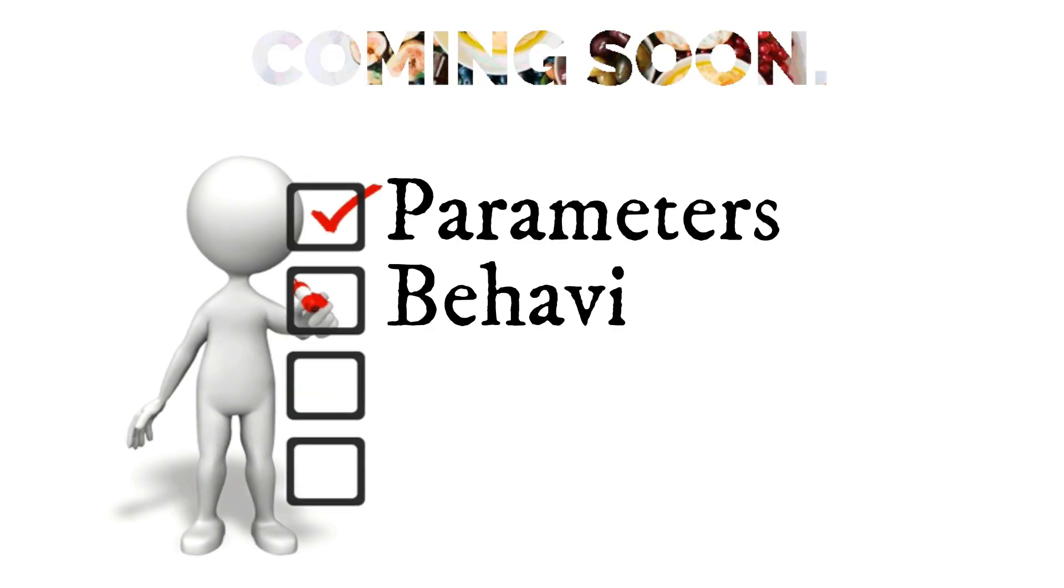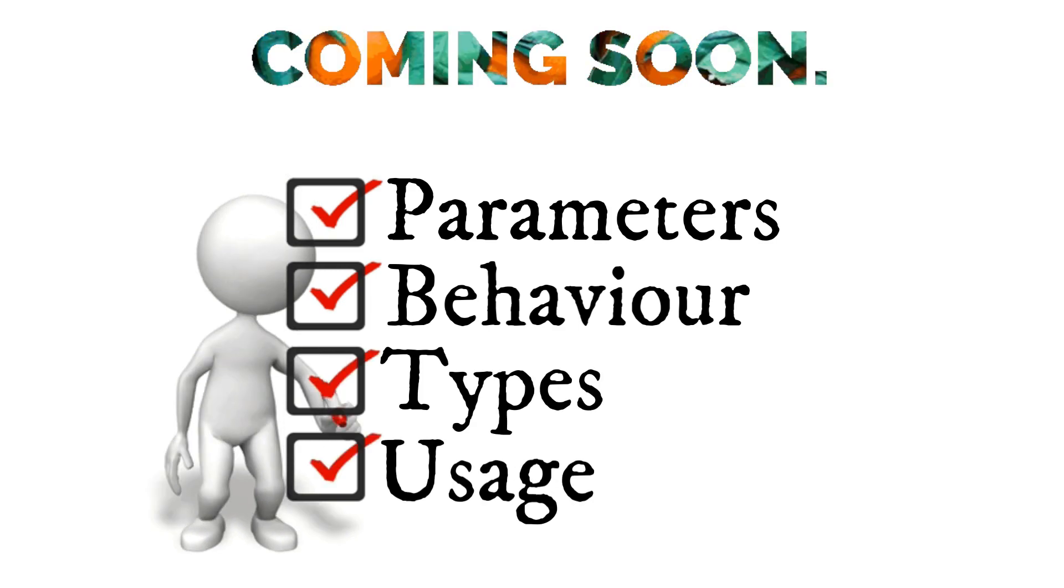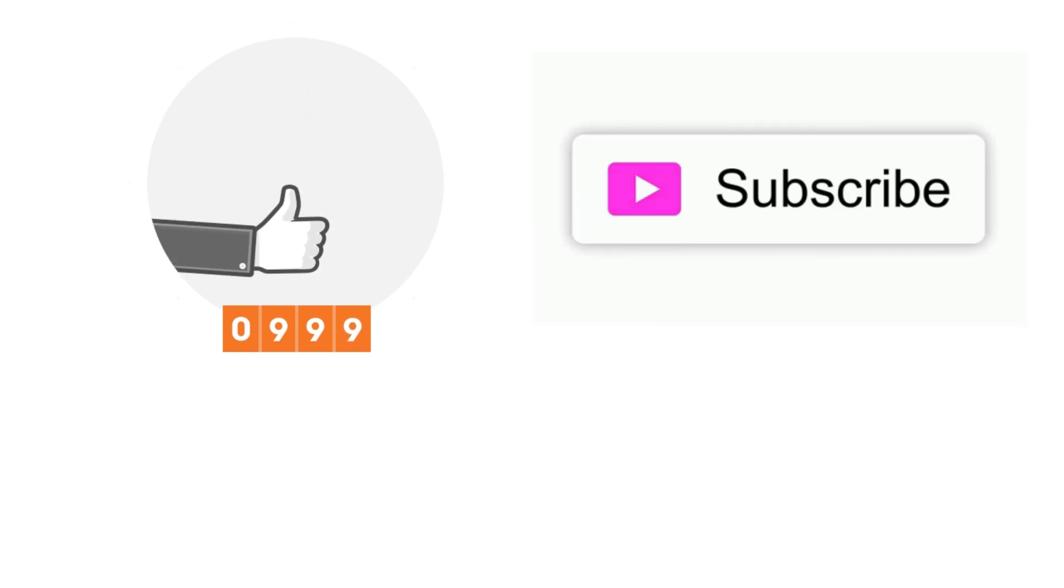In next videos, we will discuss also about the parameters, behavior of diodes, what types are and where to be used. Until then, let the likes and subscribes flow like current through a forward bias diode.